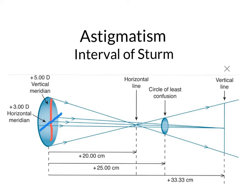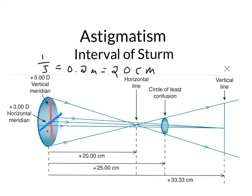Because you have two different powers in two different meridians, the vertical meridian forms a horizontal focal line at 20 centimeters away from the lens — and the way you get that is just 1 over 5. The plus 3 meridian, the horizontal meridian, creates a vertical focal line that's 33 centimeters away from the lens.